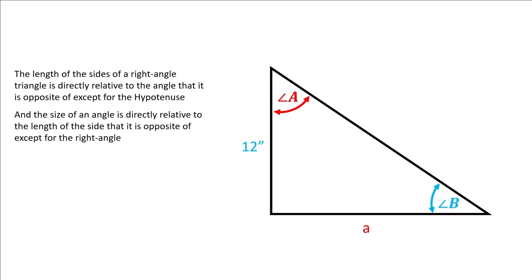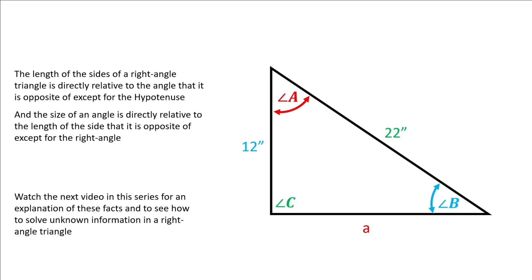Angle B is relative to side B, which is identified as 12 inches. And angle C is relative to the hypotenuse, which is identified as 22 inches. In this example we have three pieces of information — we could essentially solve the rest of this triangle, as we know the length of two sides (the 12 inch and 22 inch) and we know the size of angle C, which is 90 degrees. Watch the next video in this series for an explanation of these facts and to see how to solve unknown information in a right angle triangle.